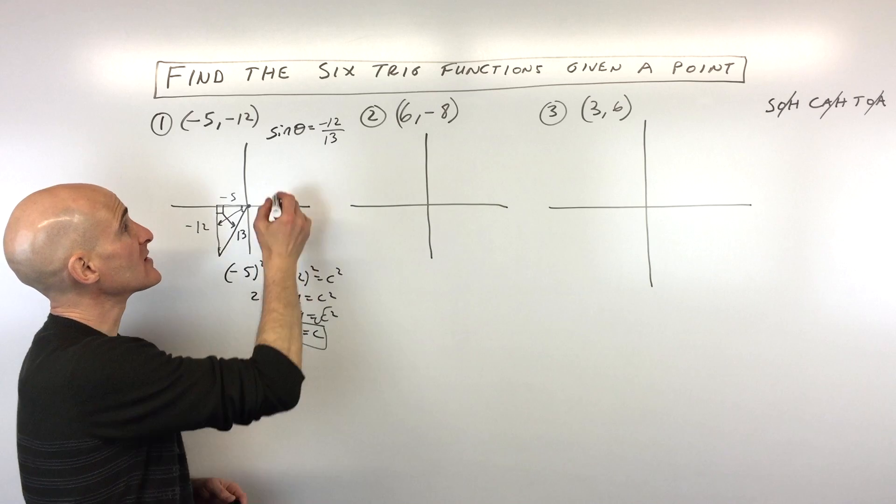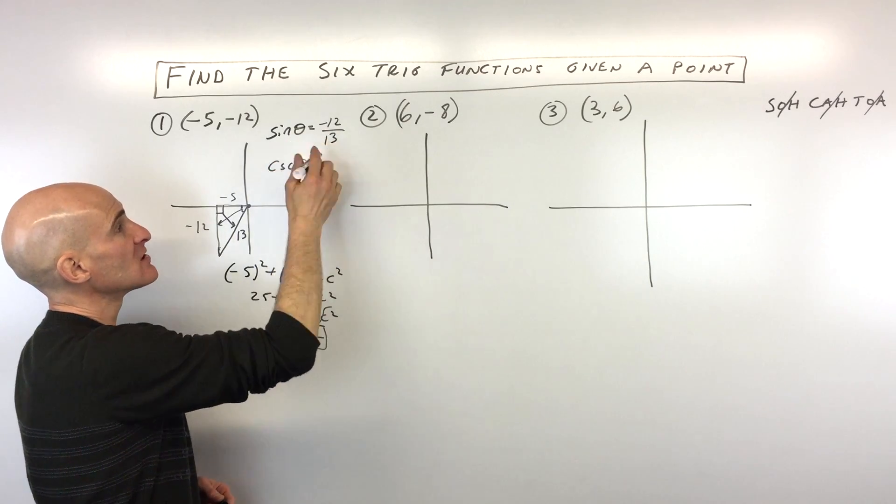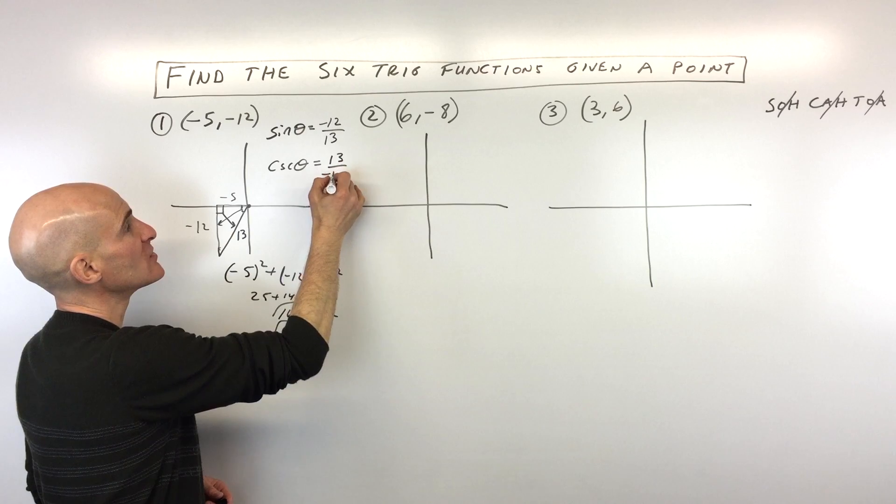Now if you want to find the reciprocal ones, like the cosecant of theta, all you have to do is take the reciprocal, and this is going to be 13 over negative 12.